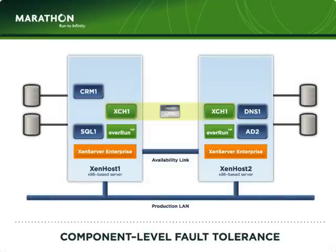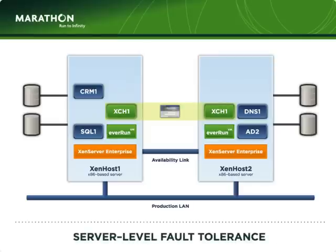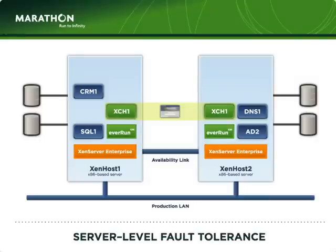For business-critical and mission-critical applications that simply can't endure even the briefest interruption, EverRun can also deliver complete server-level fault tolerance. Guests configured to this level of protection can withstand a complete virtual machine failure or even a complete host failure without any interruption whatsoever. The entire virtual machine or host can fail and the application will continue to execute without interruption. All system state and memory state are maintained, while clients remain connected and in-flight transactions continue to process. The failure is a complete non-event to the application and to the clients. Bring the server or virtual machine back online, and EverRun will automatically and transparently synchronize the paired guests to quickly get back to a fully protected state.